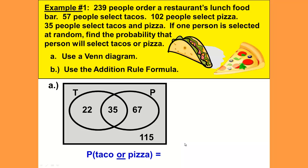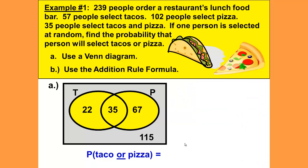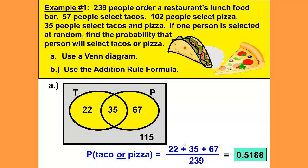So we want to find the probability of taco or pizza. Shade the taco or pizza event, which Ms. Borlaug has done here in yellow. That would be 22 plus 35 plus 67, all over the grand total of our sample space — not 115, not any of the other numbers — that's 239. That would give us 0.5188. Just use your calculator for this.